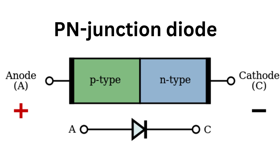A P-N junction diode is a type of semiconductor device that allows current to flow in one direction only. It is made up of two layers of semiconductor material, one P-type and one N-type, that are brought into contact with each other.